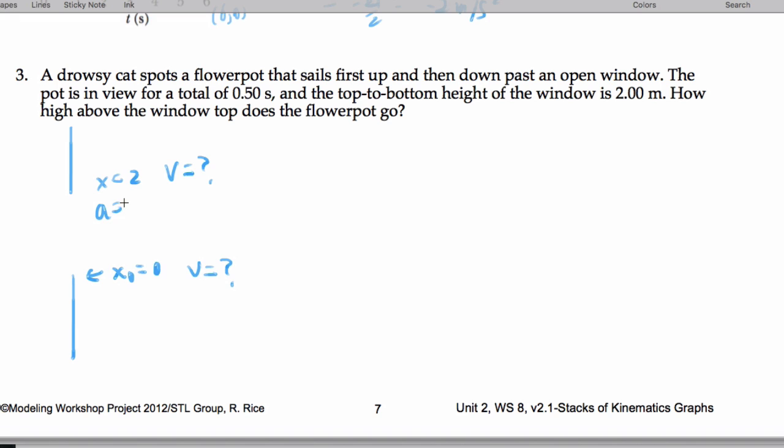I know that the acceleration is negative 10 meters per second squared due to gravity. Now it's in view for a total of 0.5 seconds, which means the time here is 0.25 seconds to sail past. So let's just see what we can solve for.